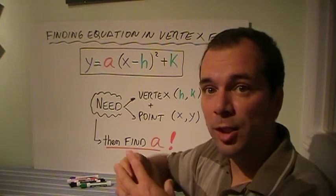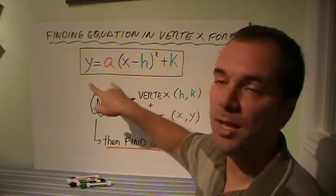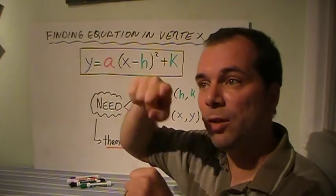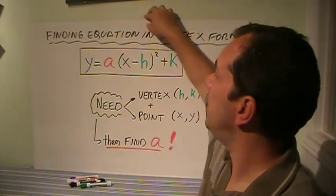Once you find out the a, you put it back together with just the h and the k and the a. Leave the y and the x as they are, because that's going to represent all the points along the parabola, and you're set.